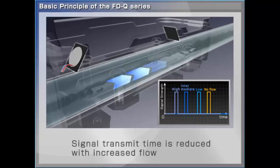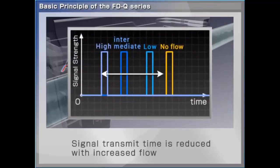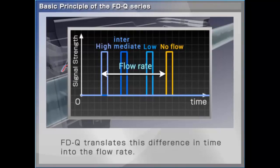As you can see, the faster the flow, the quicker the signal is transferred to the receiver. FDQ translates this difference in time into the flow rate.